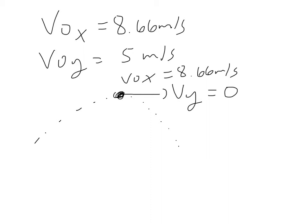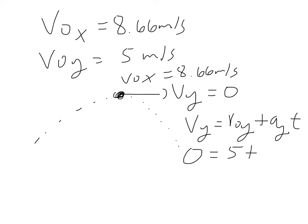Note that vy equals zero at maximum height, where v0y was the initial velocity along the y direction. To find how long it takes to reach maximum height, we use one of our big four equations: the final velocity along y equals the initial velocity along y plus the acceleration along y times time. The final velocity along y is zero. The initial velocity is 5 meters per second. The acceleration is negative 9.8 meters per second squared — otherwise you'd get negative time. Solving this gives a time to reach maximum height of 0.51 seconds.